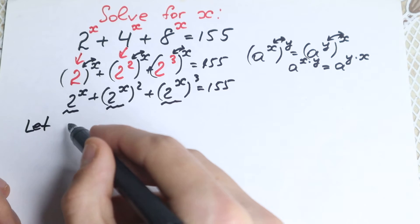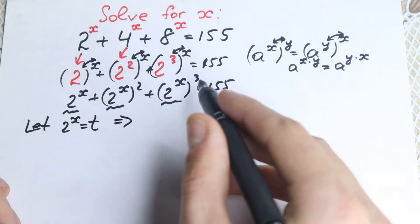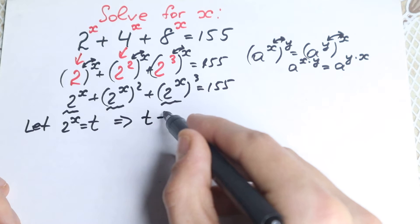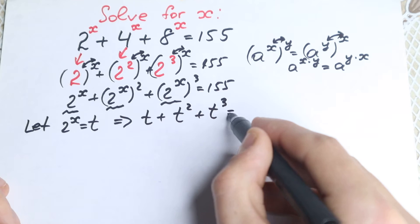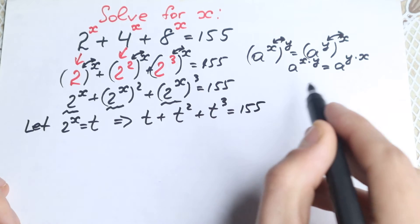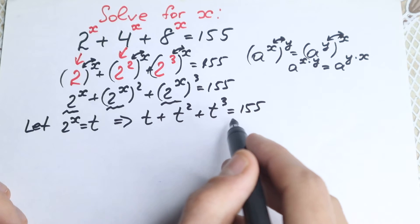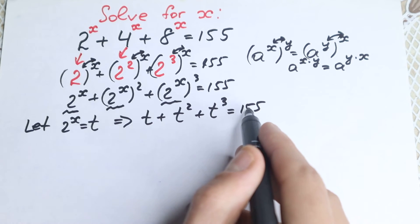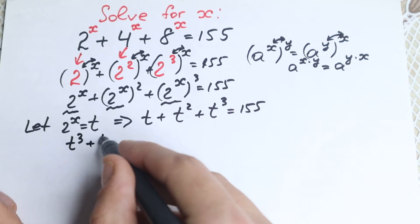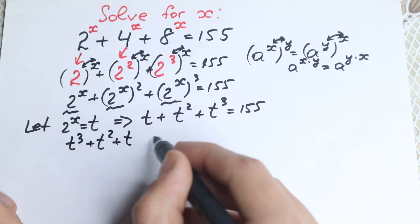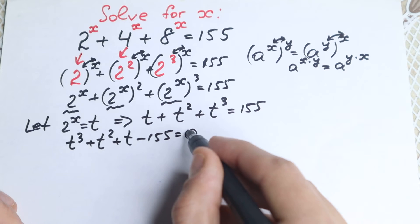Let 2 to the power x equal t. Then we have a cubic equation: t plus t squared plus t cubed equals 155. Let's rearrange by bringing 155 to the left side, giving us t cubed plus t squared plus t minus 155 equals 0.